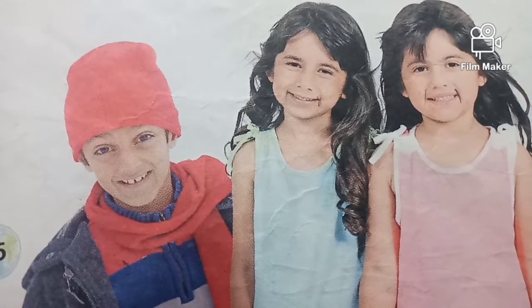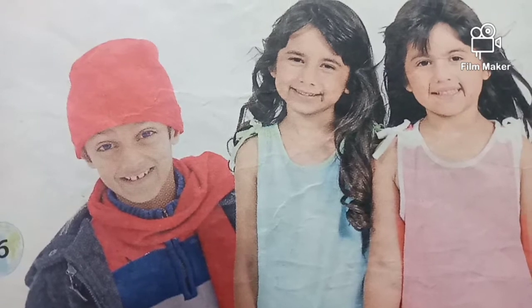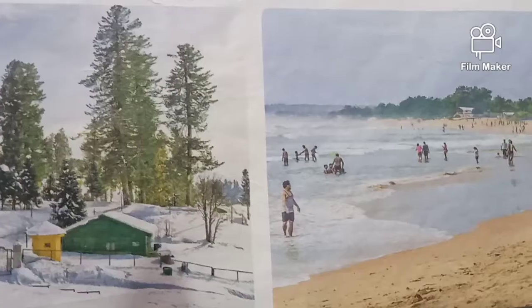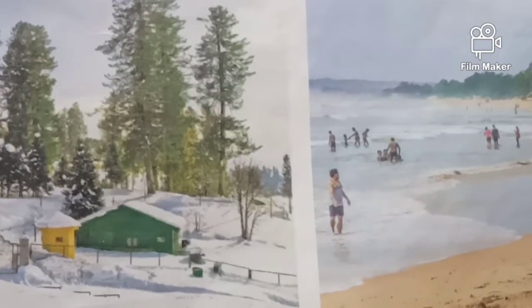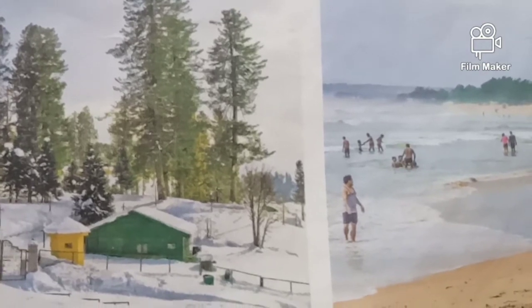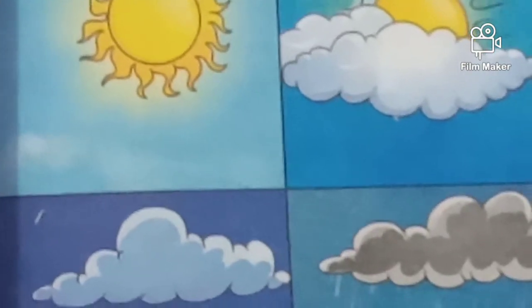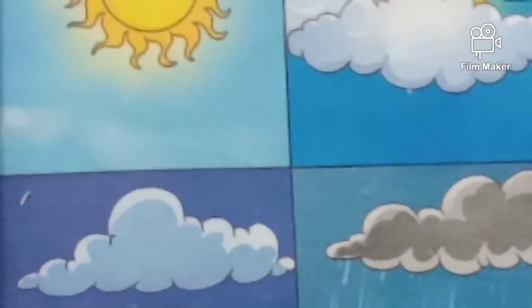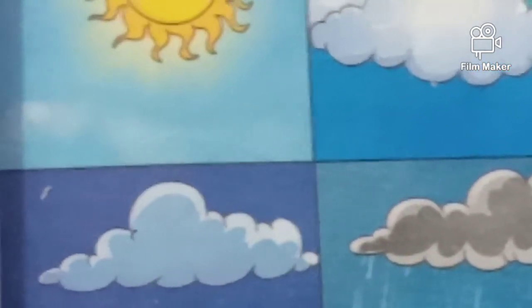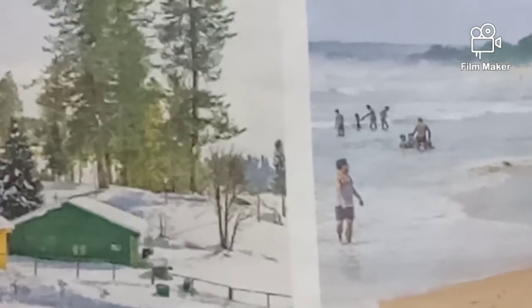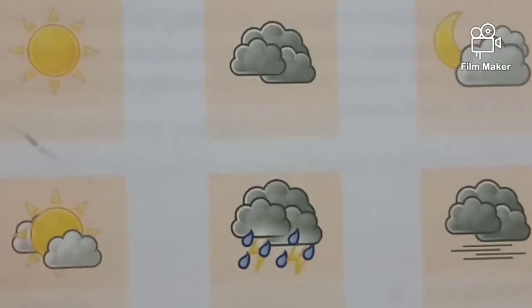The clothes we wear and the food we eat depend largely on the climate of the place where we live. Climate is different from weather. Weather is the day-to-day conditions of the air at a particular place — it can be described as sunny, cloudy, rainy, windy, and foggy. On the other hand, the climate of a place is the pattern of weather conditions over a long period of time, about 35 to 40 years. The landform of an area influences its climate, and temperature and rain are the two important elements that affect climate.